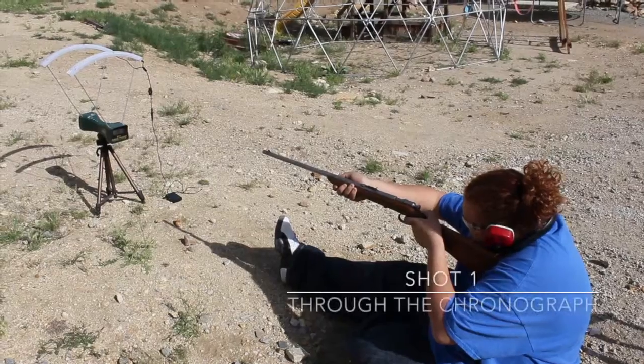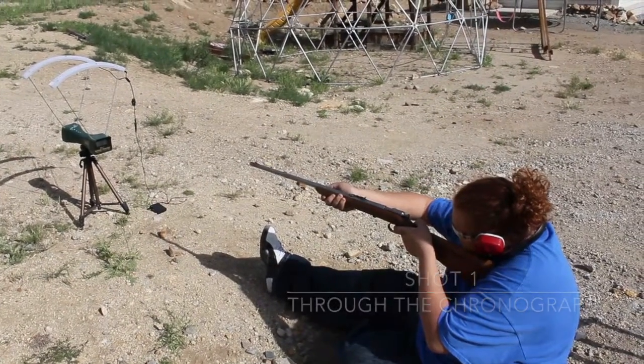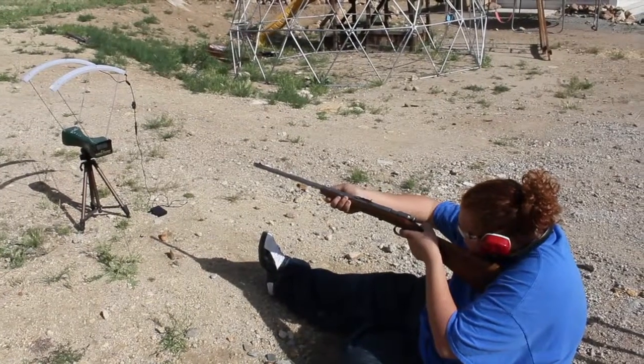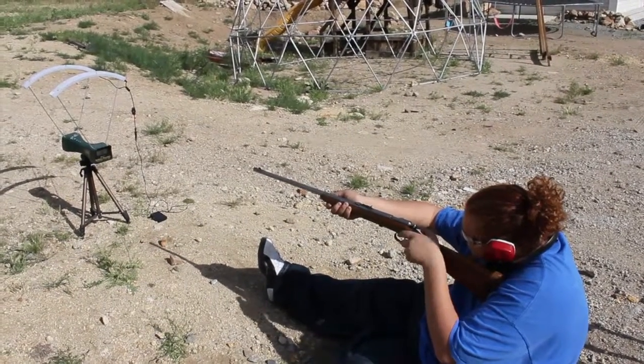For our first shot we are going to be shooting the .22 through a chronograph which measures the velocity of the bullet so we know the actual velocity. Tyrese is going to do that now. Fire when ready.